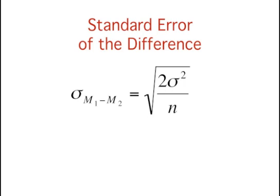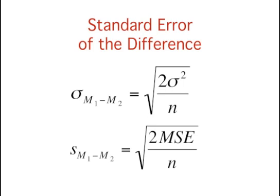Here is our formula again for the standard error of the difference. Here is the formula for the estimated standard error of the difference. Notice that instead of sigma sub M1 minus M2, there is an S sub M1 minus M2. This is because we are estimating the standard error.